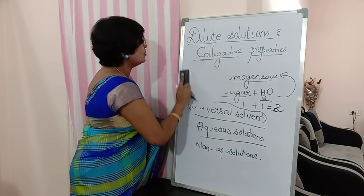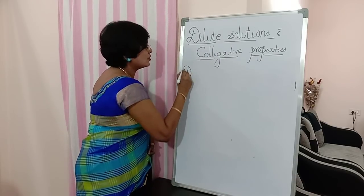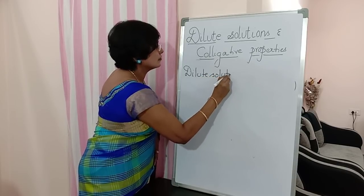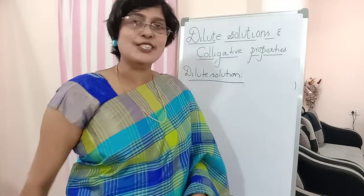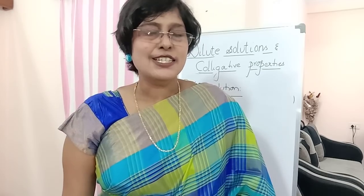Now let us see what a dilute solution is — put the side heading: Dilute Solution. In the beginning of the class, you dissolved one spoon of sugar in one full glass of water. Now suppose you take a new full glass of water and add half a glass of sugar or salt. The solution prepared from such quantities is called a concentrated solution.